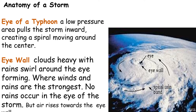The spiral rain band continues to move around the eye — its speed depends on the speed of the wind. The eye wall is where clouds, heavy rain, and the strongest winds are found around the eye. No rain occurs in the eye of the storm itself, but air rises towards the eye wall.